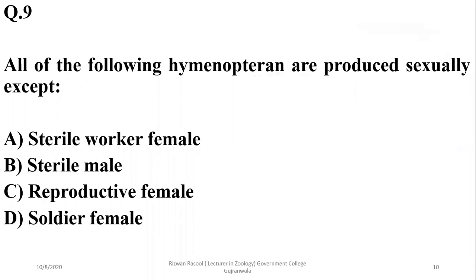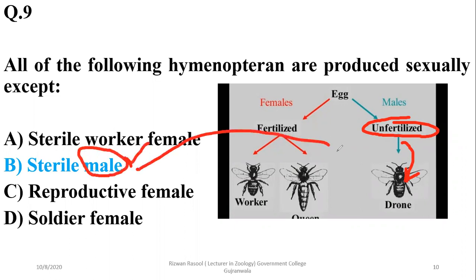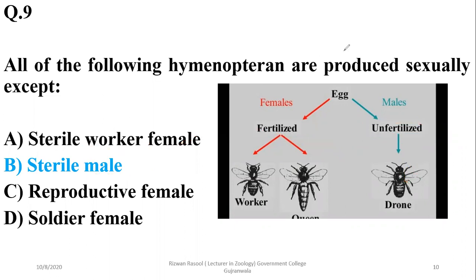Number nine: all of the following hymenopterans are produced sexually except — actually, most of the sterile worker females and reproductive females in the case of a honeybee colony are produced sexually. But sterile males are haploid and are produced parthenogenetically from an unfertilized egg, so the right option will be beta. As you can see, if the egg is unfertilized it will develop into drones. Males are always produced from unfertilized eggs, whether they are sterile or fertile.